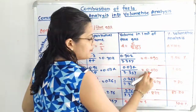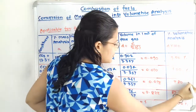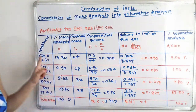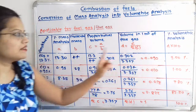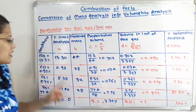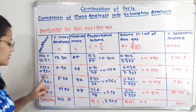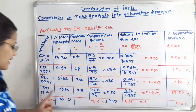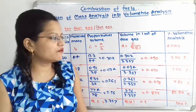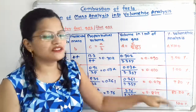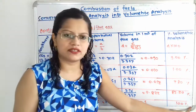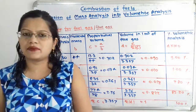Multiplying by 100: CO₂ = 9%, CO = 1%, O₂ = 7.8%, and N₂ = 82.2%. Adding all these percentages gives 100%. So the last column is the final answer — the percentage volumetric analysis for each constituent.